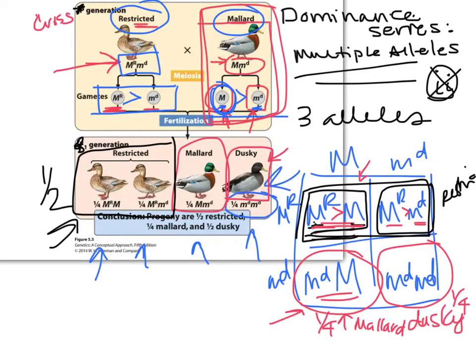So what do we know? We know that everything, both of them, are dominant over little d. And this is just the greater than sign that we used to use when we were in grade school. So this is less than on this side of it, right here. That guy, the double recessive, the dusky, the big loser, kind of like that guy. And then what goes in the middle? Which one's next?